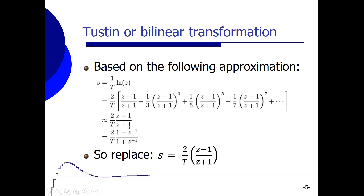When you want to implement the controller, for instance in Simulink, it is convenient to have negative powers of z. So we divide the complete numerator and denominator by z, which yields s replaced by (2/T) · (1 − z⁻¹)/(1 + z⁻¹). By using the Tustin or bilinear transformation, we replace s by (2/T) · (z − 1)/(z + 1), or this negative-power expression when implementing in Simulink.